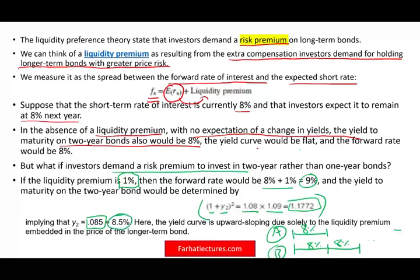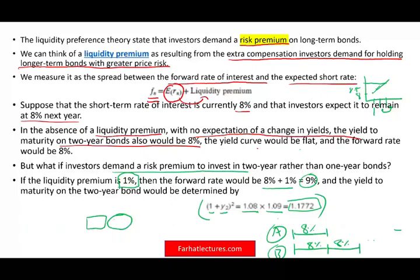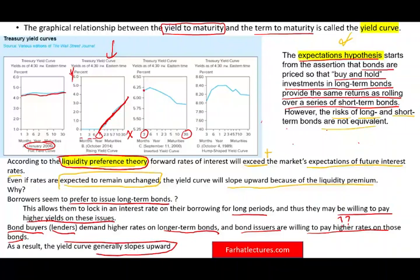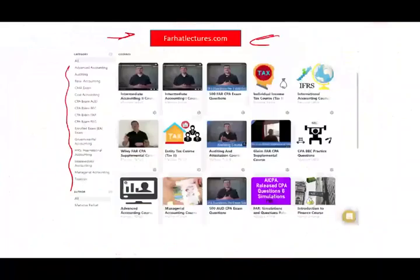If it's 8% for year one and 8.5% for year two, if we graph it, it's going to be upward sloping. And if you want to invest for a third year, obviously you're going to need an additional premium — you need to be compensated for an extra return. This is, in a nutshell, the liquidity preference theory and how it explains the yield curve. If you like this recording, please like it and share it, and don't forget to visit my website farhatlectures.com for additional resources. Good luck and study hard.